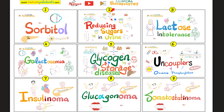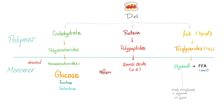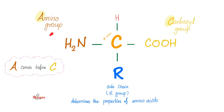Watch these videos in order — you'll find them in the Clinical Biochemistry playlist. What are amino acids? When we eat proteins, they get digested into amino acids. We call them amino acids because they have an amino group (NH2) and a carboxylic acid group (COOH).